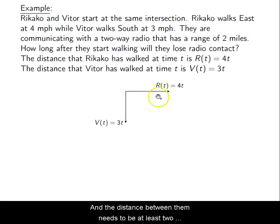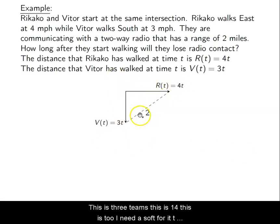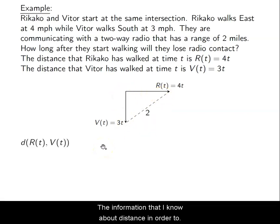The distance between them needs to be at most two miles in order to stay in radio contact. So once they reach the distance of two miles, they can no longer talk. So once they go farther than that, there's no more communication. So I need the distance between them to be two. This is 3t, this is 4t, this is 2. I need to solve for T. I can use the information that I know about distance in order to figure this out. I need to know when the distance between them is two.